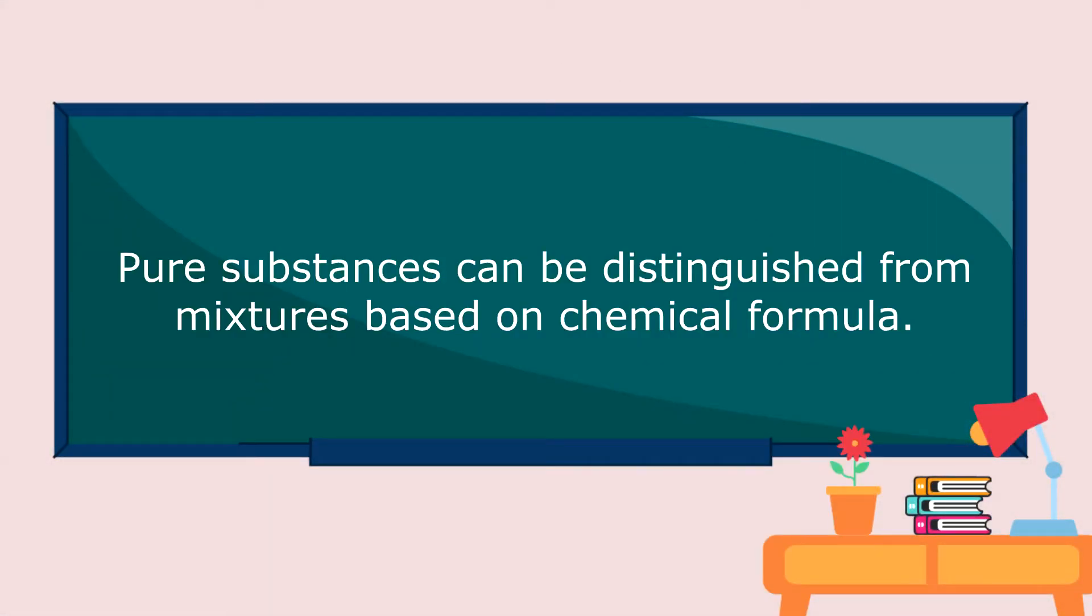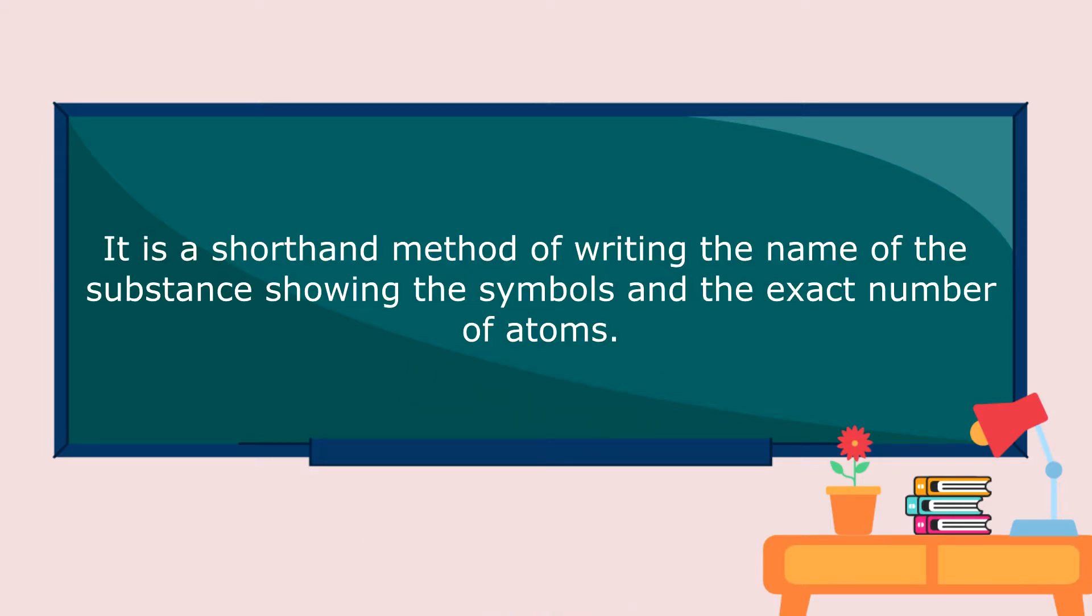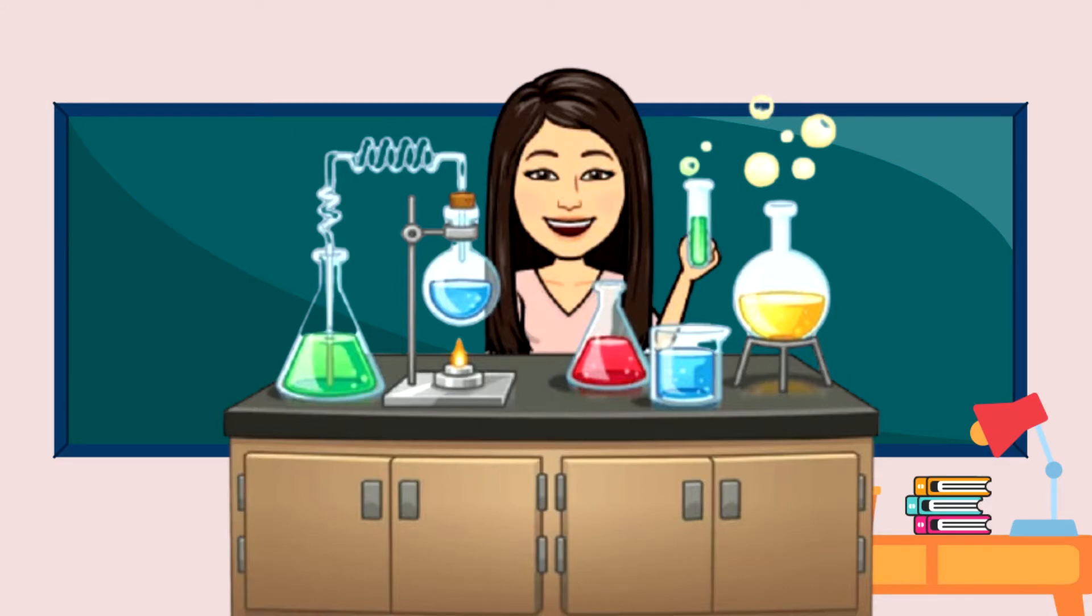Now, pure substances can be distinguished from mixtures based on chemical formula. What is a chemical formula? It is a shorthand method of writing the name of the substance, showing the symbols and the exact number of atoms.